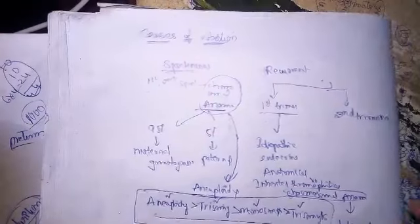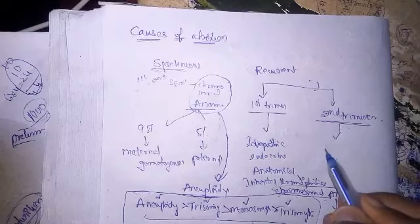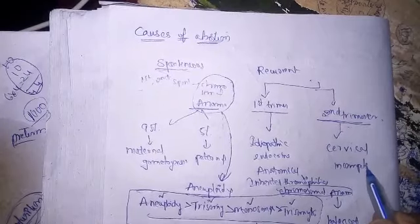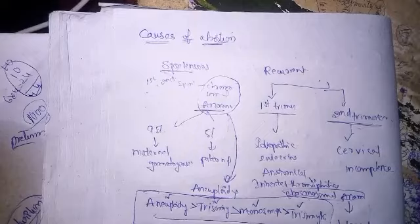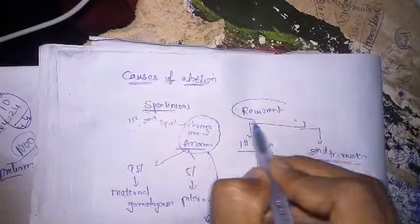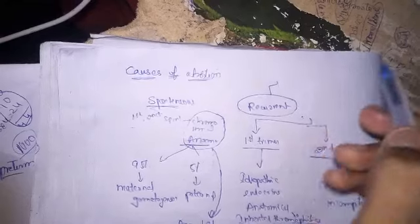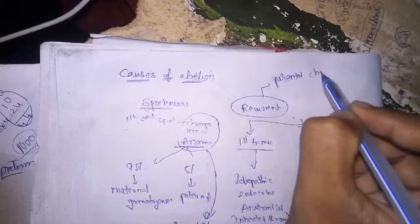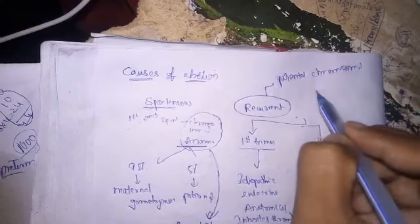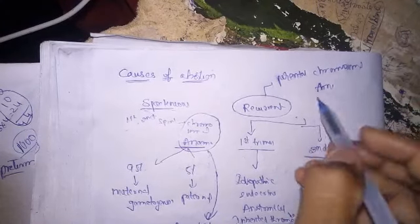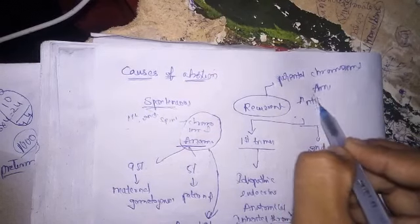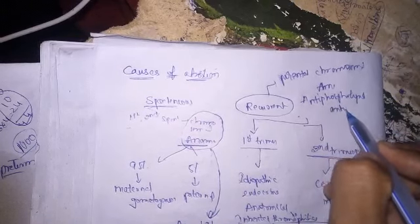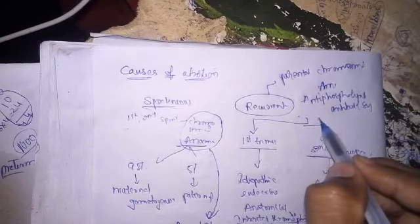Moving to the causes during the second trimester: the most common cause is cervical incompetence. Overall, the most common causes of recurrent abortion in general are parental chromosomal abnormalities, antiphospholipid antibody syndrome, and uterine abnormalities.